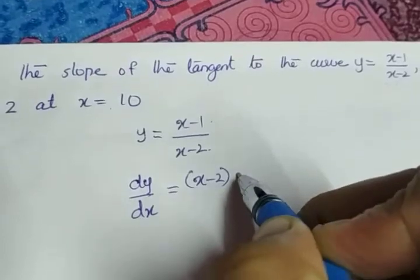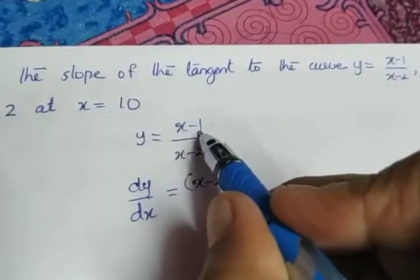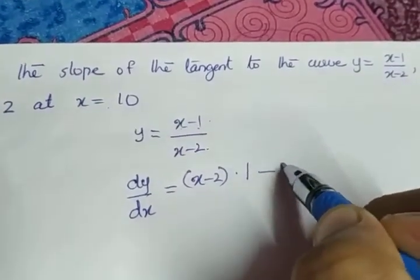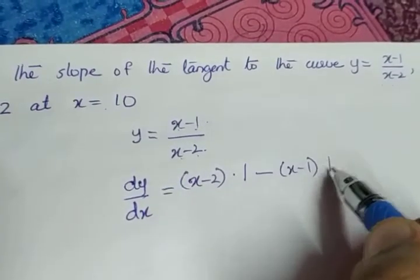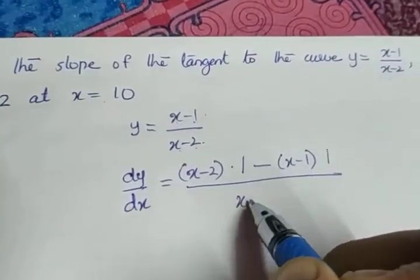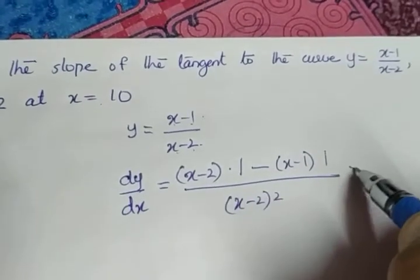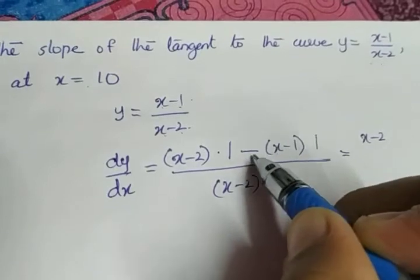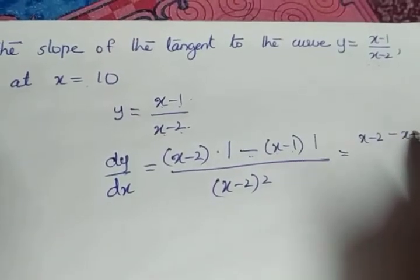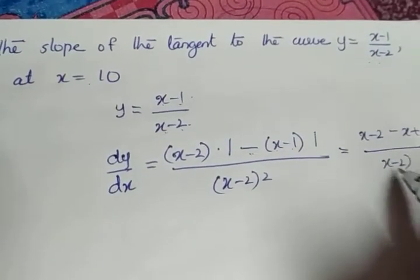So denominator (x-2) into derivative of numerator - derivative of (x-1) is 1 - minus numerator (x-1) into derivative of the denominator, again as 1, divided by denominator square. Just open the bracket. So what we will get in the numerator: x minus 2 minus x plus 1, minus x plus 1 by (x-2) the whole square.